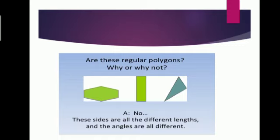These are not regular polygons because all the sides are of different lengths and all the angles are different. That is why they are not regular polygons. But these are still polygons — they are polygons but not regular polygons.